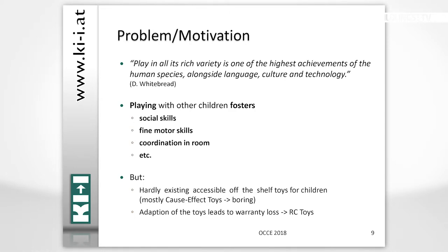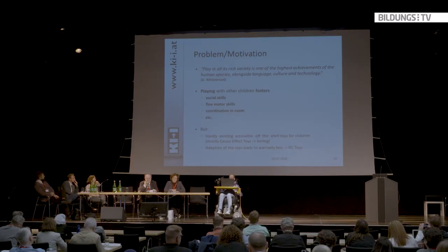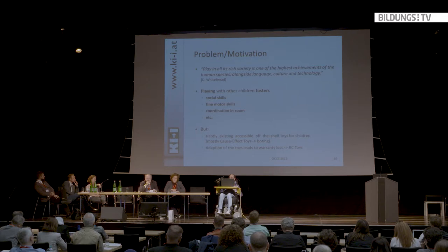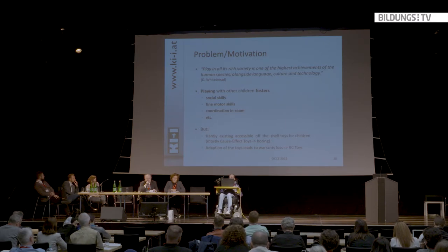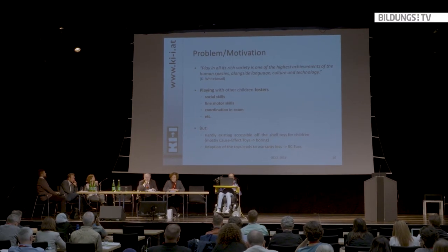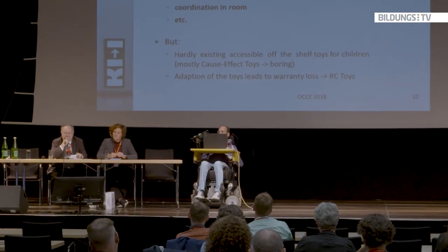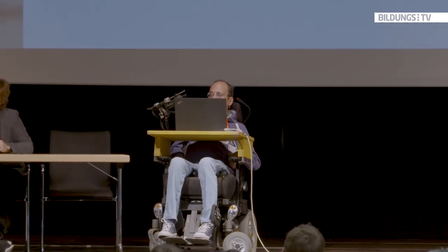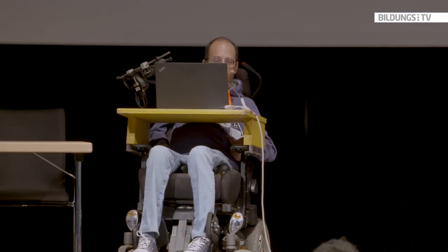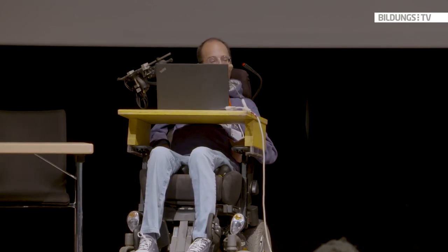The next thing is the 4D joystick. We did all the prototyping with ASTERIX. The 4D joystick was developed for playing — not for education. Playing is very important because playing with other children fosters social skills, fine motor skills, and coordination. But the problem is that there are hardly any accessible toys for children with disabilities, and existing cause-and-effect toys are pretty boring for older children. Also, adapting toys leads to warranty loss. So we decided to control RC toys, and our solution was the 4D joystick.